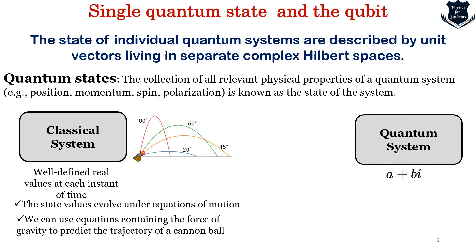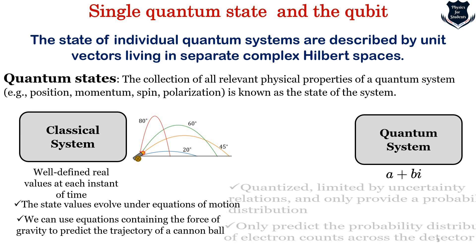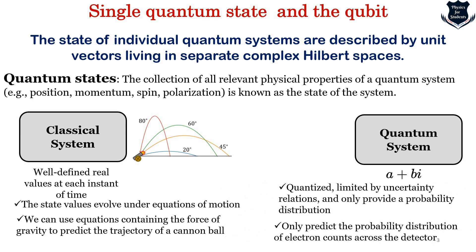Compared to that, when we get a quantum system we deal with complex numbers like a plus bi. We find out that quantized means limited by uncertainty relations, and it can only provide a probability distribution. It can only predict the probability distribution of electron count that crosses or accounts for that particular detector. This is the famous double slit experiment.